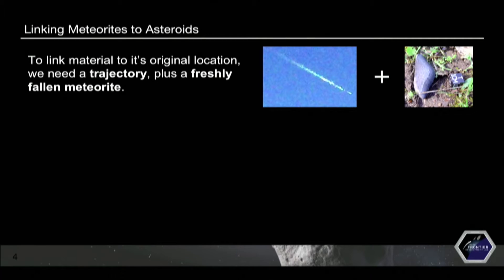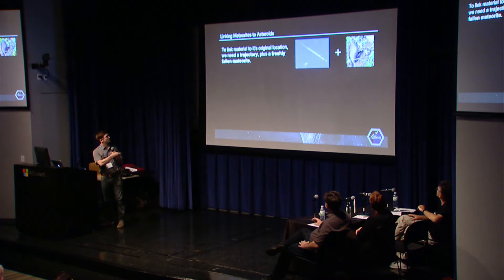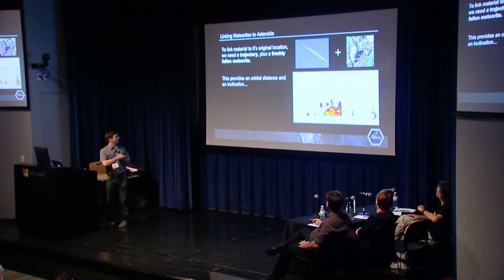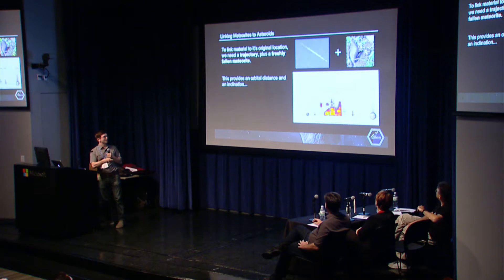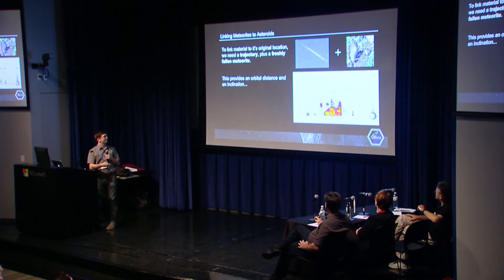The way you link an actual physical meteorite sample to its asteroid family is by getting a meteorite sample and a trajectory. Using that trajectory, it provides an orbital distance and an inclination. As you can see on this plot, you have the orbital distance and orbital inclination that different asteroids are on. If you have an orbital distance, it tells you about the resonance that the meteor which caused the meteorite came from.